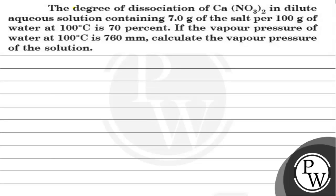Let's read this question. The degree of dissociation of Ca(NO₃)₂ in a dilute aqueous solution containing 7 grams of salt per 100 grams of water at 100 degrees Celsius is 70%. If the vapor pressure of water at 100 degrees Celsius is 760 mm, calculate the vapor pressure of the solution.